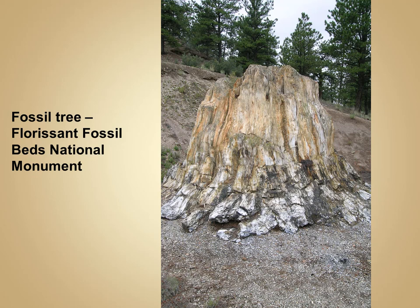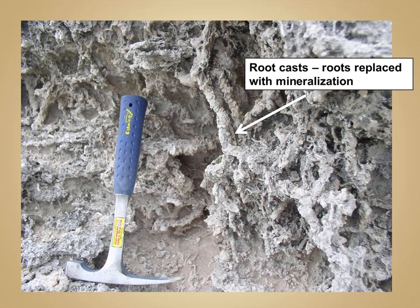For example, in this photograph is a fossilized sequoia stump at Florissant Fossil Beds in Colorado. This is not the original wood material — all of it has been completely replaced by silica. In some cases, the original material completely dissolves away and leaves a void space, which may be filled later by silica or calcite from groundwater. In this image you can see what's called a root cast, where the original roots are no longer there, but the void space left behind has been replaced by calcite.